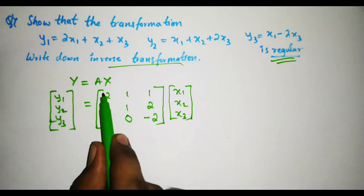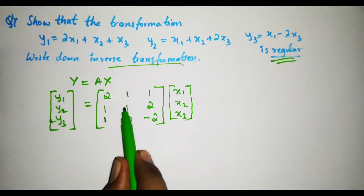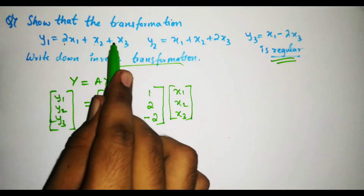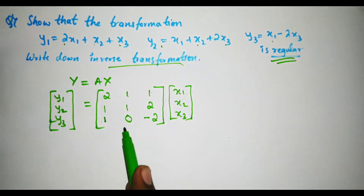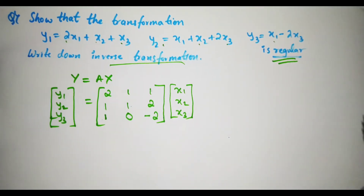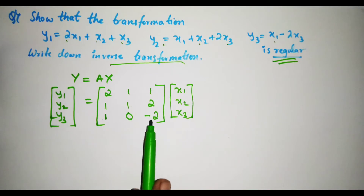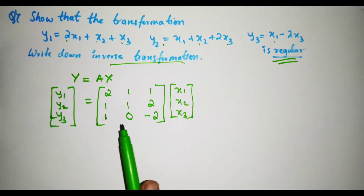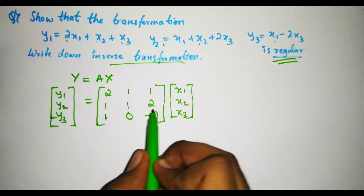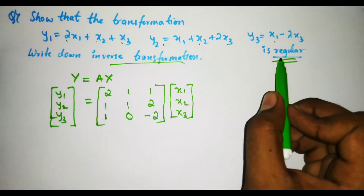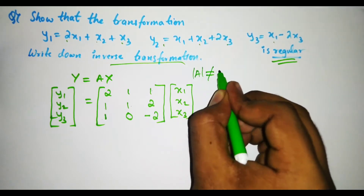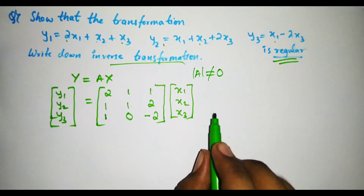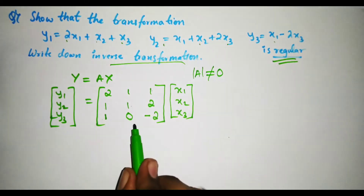Basically, the matrix is written as a1, a2, a3 / b1, b2, b3 / c1, c2, c3. Since c1, c2 are missing, they are given as 0, and c3 is minus 2. Remember to always note the sign. Now, to show the transformation is regular, we have to prove that determinant A is not equal to 0.